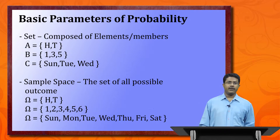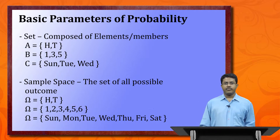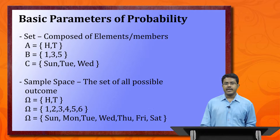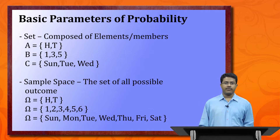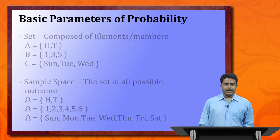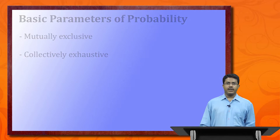Mutually exclusive means: for tossing a coin, if head appears then tail cannot appear, and vice versa. For rolling a die, if 2 appears then no other number can appear. Collectively exhaustive means we must consider all possible outcomes — for a die, the sample space cannot be just {1, 2, 3, 4, 5}; it must be {1, 2, 3, 4, 5, 6}. Both properties are very important.